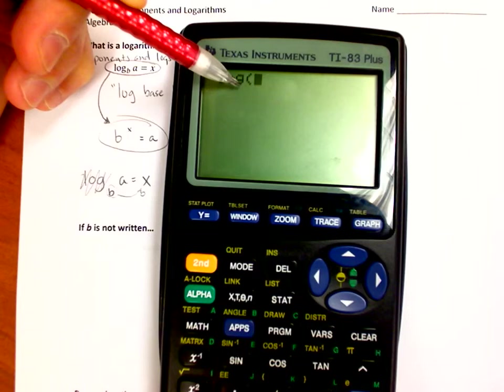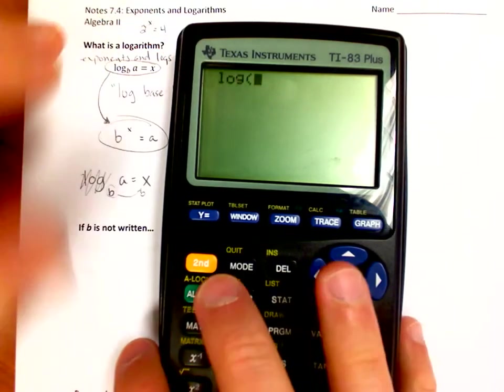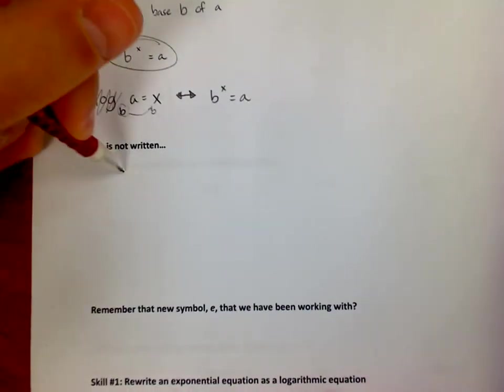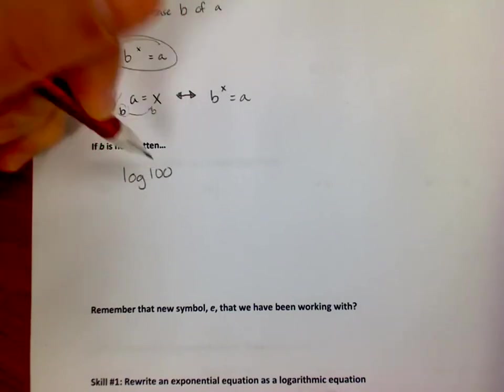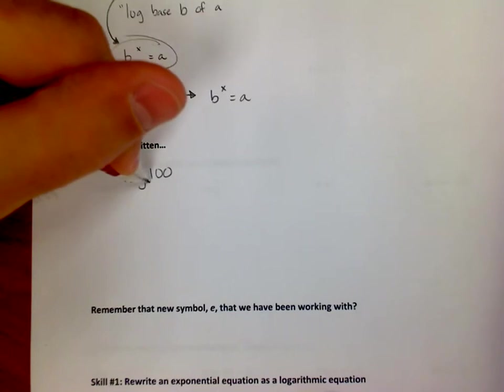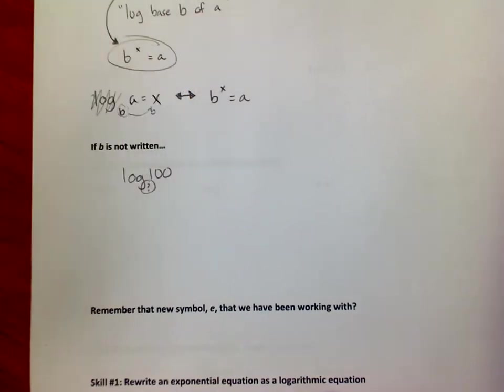So that's going to be an issue and so we're going to find out that there is a base here. If I just see something that's written like this, log of 100, if I don't see anything down here, the question is what is that? What if they don't tell me what that b value is, that base?